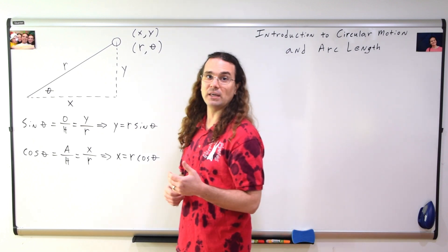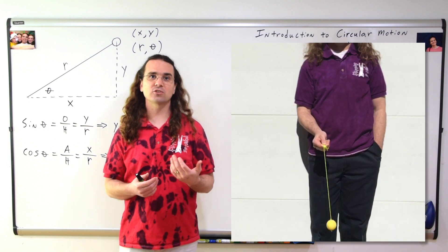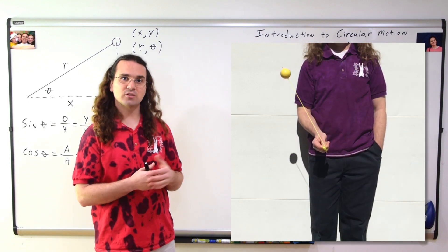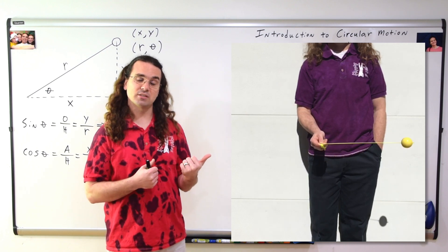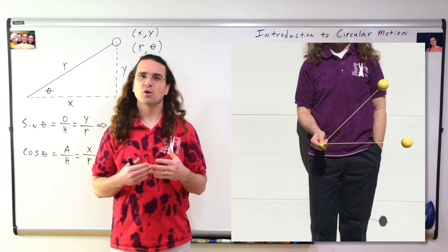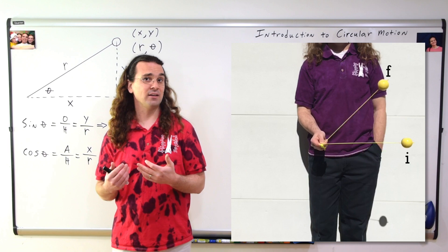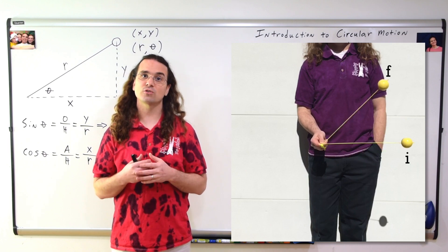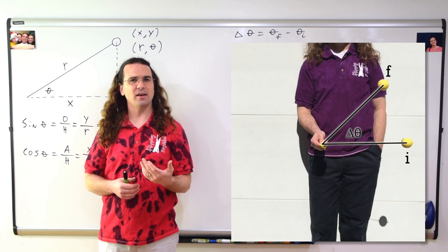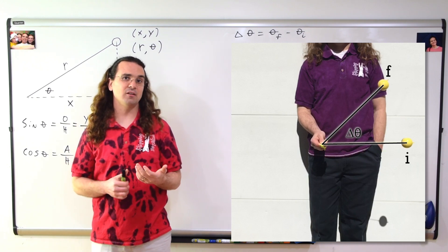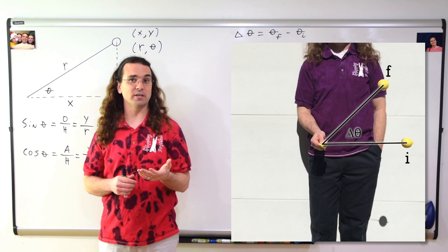Now, let's discuss how we describe an object moving from one location to another when it is moving along a circle with a constant radius. Again, we have the sphere on the string, only this time we're going to discuss having it move from this initial position to this final position. When it does, it goes from an initial angular position to a final angular position, which means it goes through an angular displacement. The angular displacement, or delta theta, equals angular position final minus angular position initial. But the sphere does not only go through an angular displacement, the sphere also travels a linear distance.